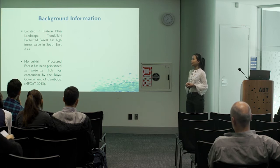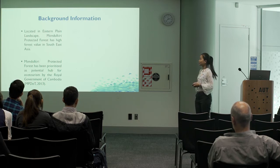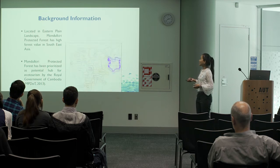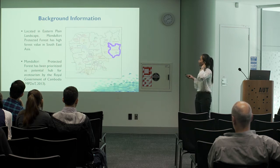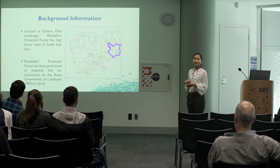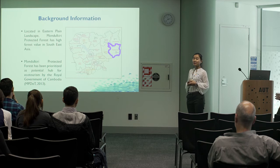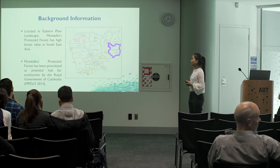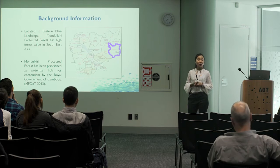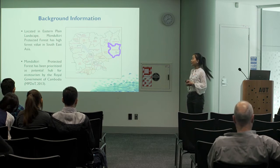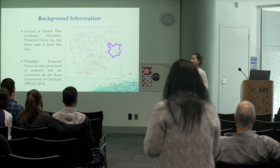I will start by introducing where Madhukuri Province and Madhukuri Protected Forest are. Madhukuri Protected Forest is located in Madhukuri Province and it is one of the five biggest protected forests in Cambodia, located in the eastern plain landscape area. It has also been prioritized as the core zone for ecotourism development by the Royal Government of Cambodia in 2013.